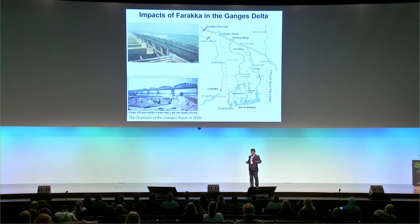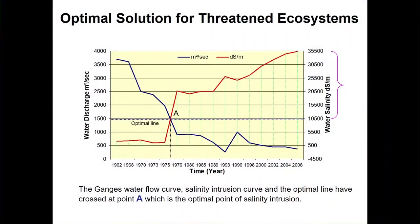Looking at the history of river water flow — shown by the black line — before 1975 there was a huge amount of water in the basin. After the construction of the barrage, water was diverted, and suddenly the salinity (shown by the red line) increased, which is a threat for sensitive mangrove plants and animals. For example, Heritiera fomes cannot survive under these conditions.